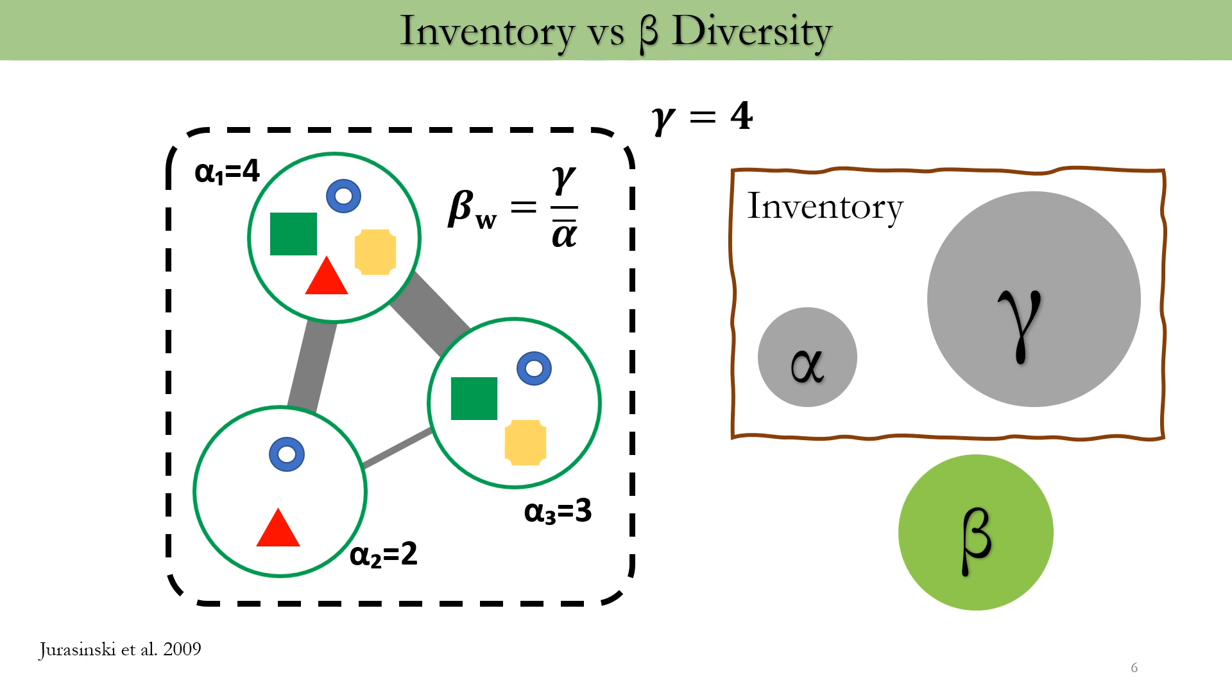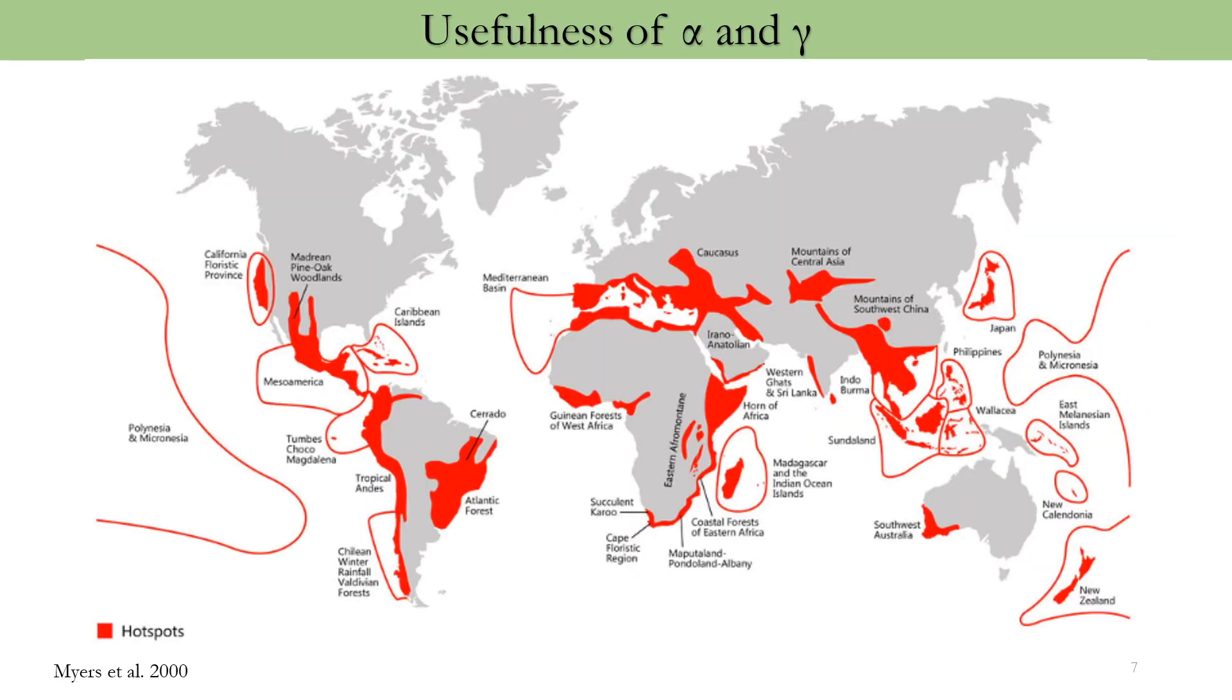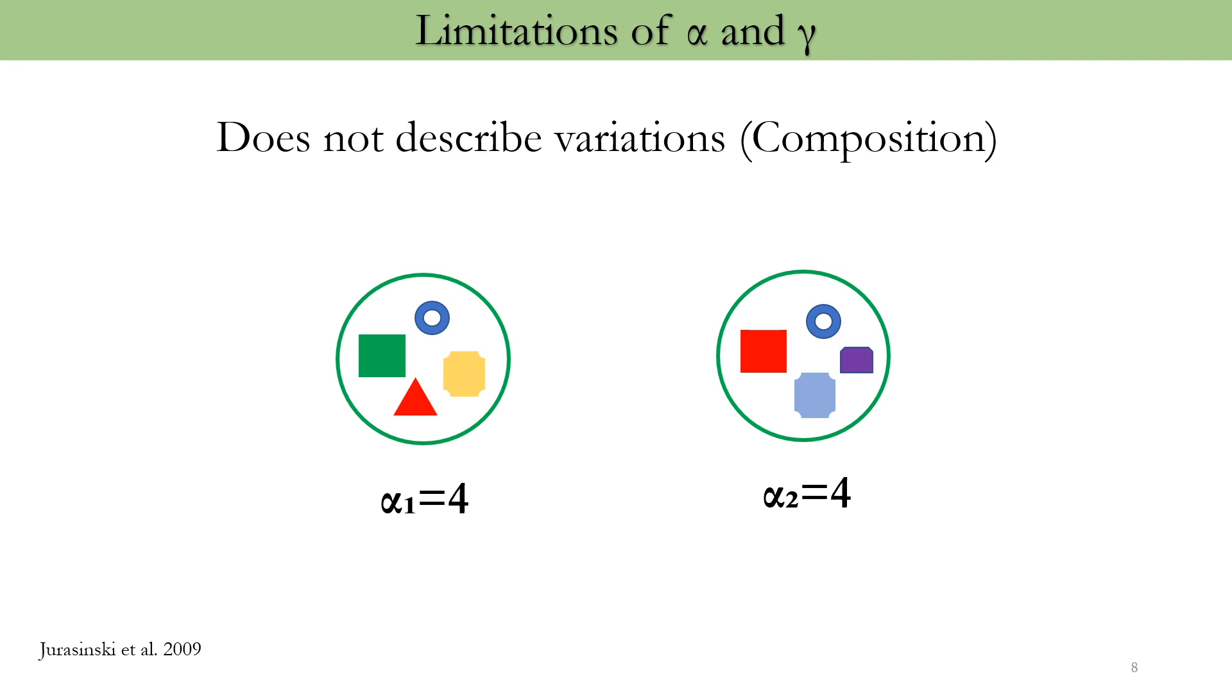But alpha and gamma are also very useful. And historically, they have been used for identifying global biodiversity hotspots. But alpha and gamma cannot inform us of something very crucial and that is about variation in composition of community. For example, in this hypothetical case, the green circles are representing two different sites and the shapes are species. Now, alpha in both of these sites are four, but this does not tell us that different species are making up this alpha of four.